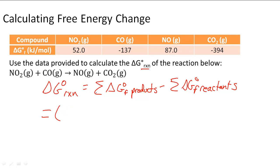We're going to use the products first. We see that NO is our first product, so it's 87 kilojoules plus negative 394 kilojoules because we only have one mole of it, minus the sum of the moles on this side: 52.0 kilojoules plus negative 137 kilojoules.